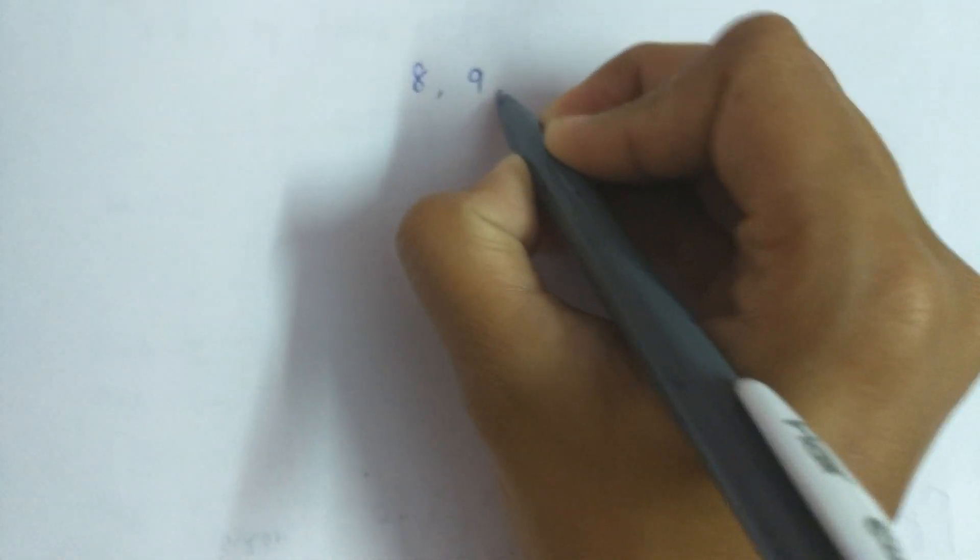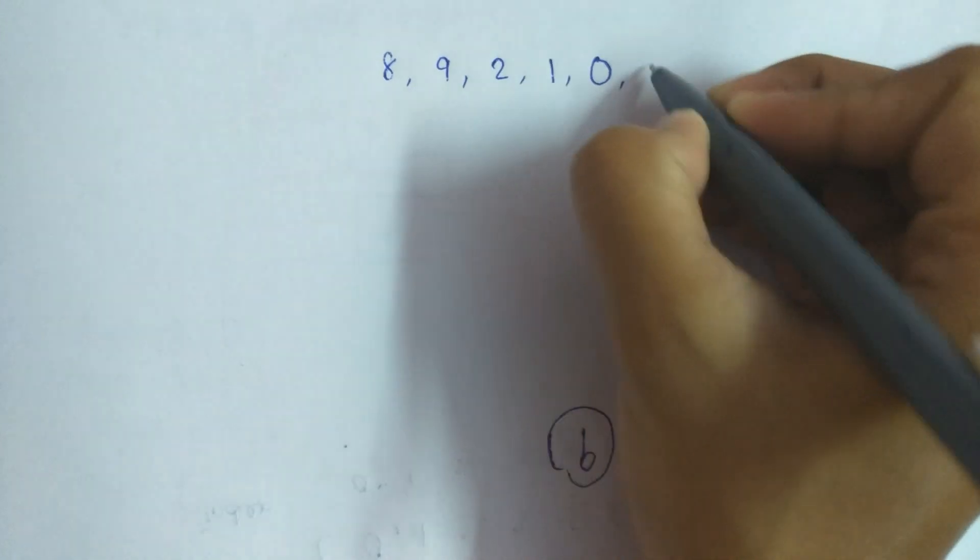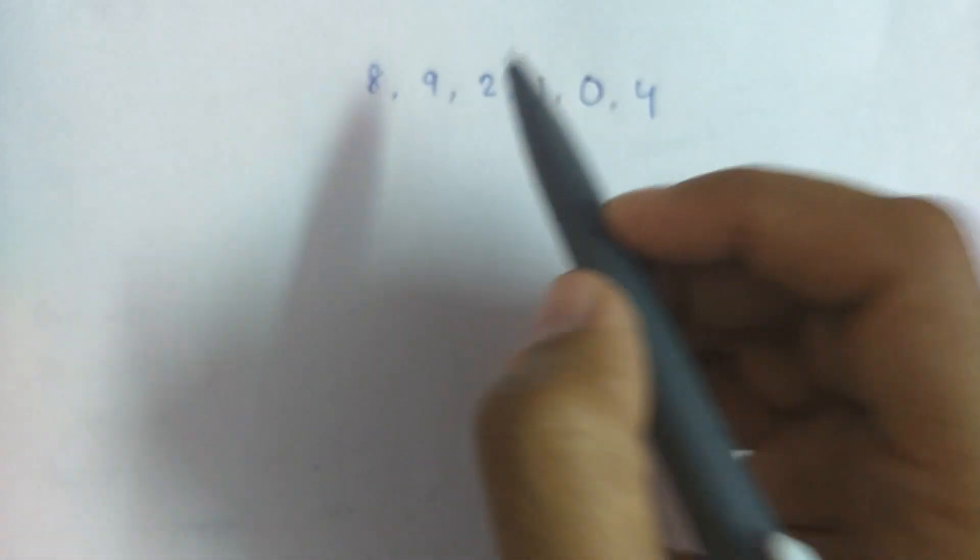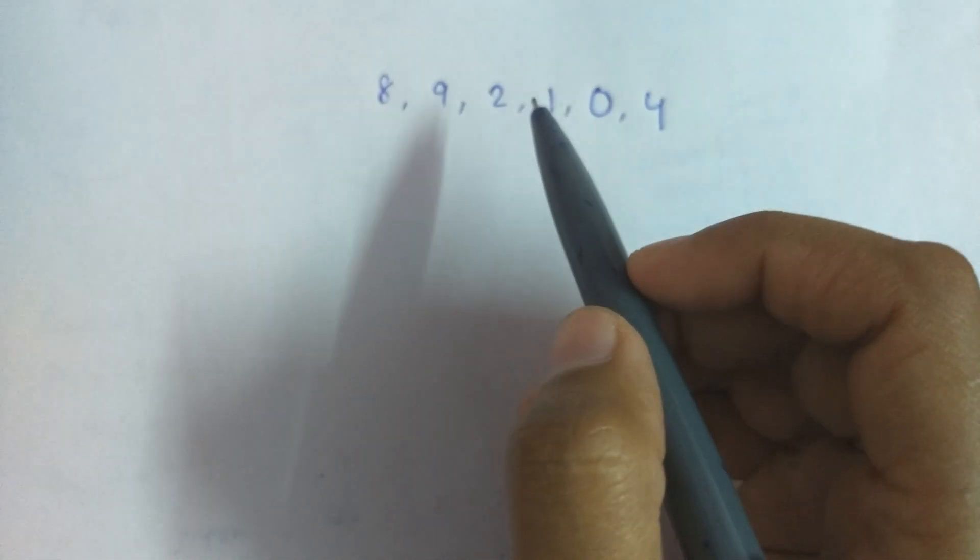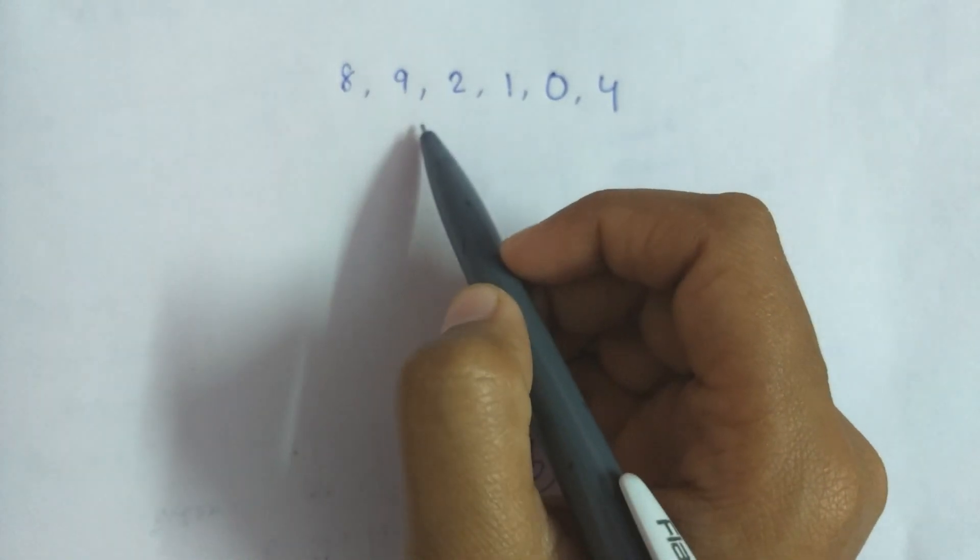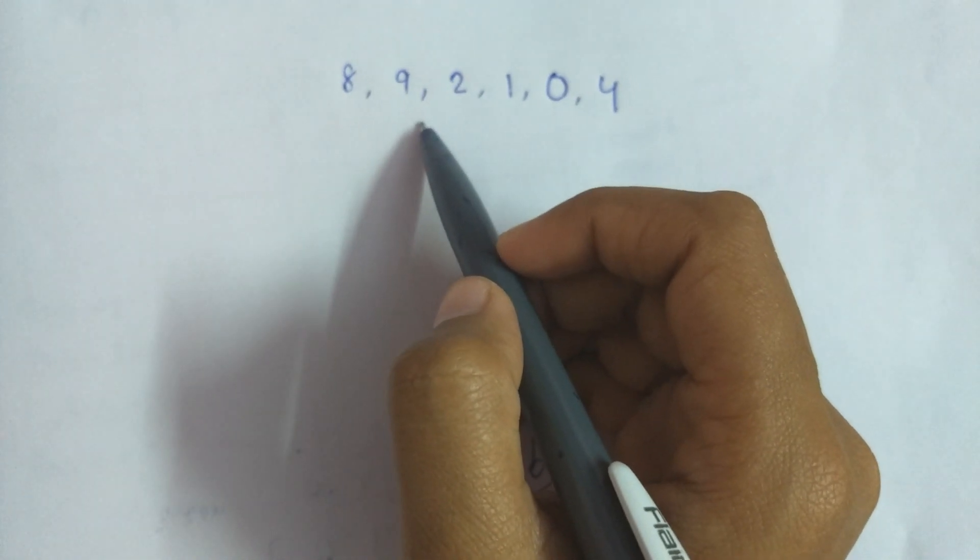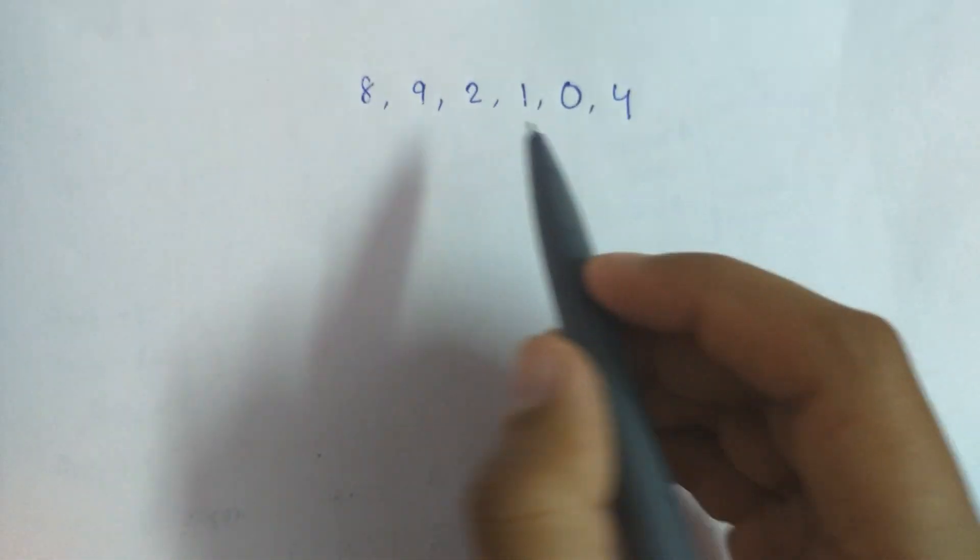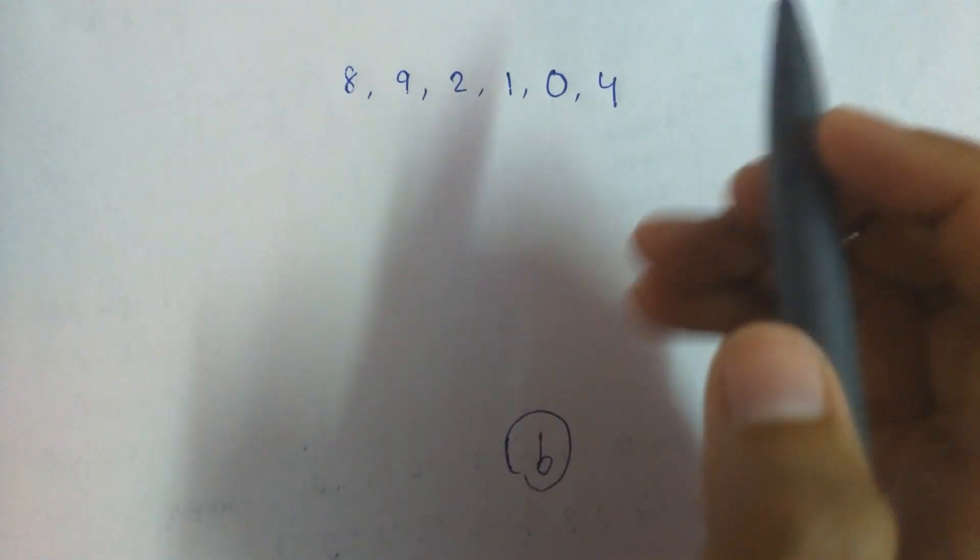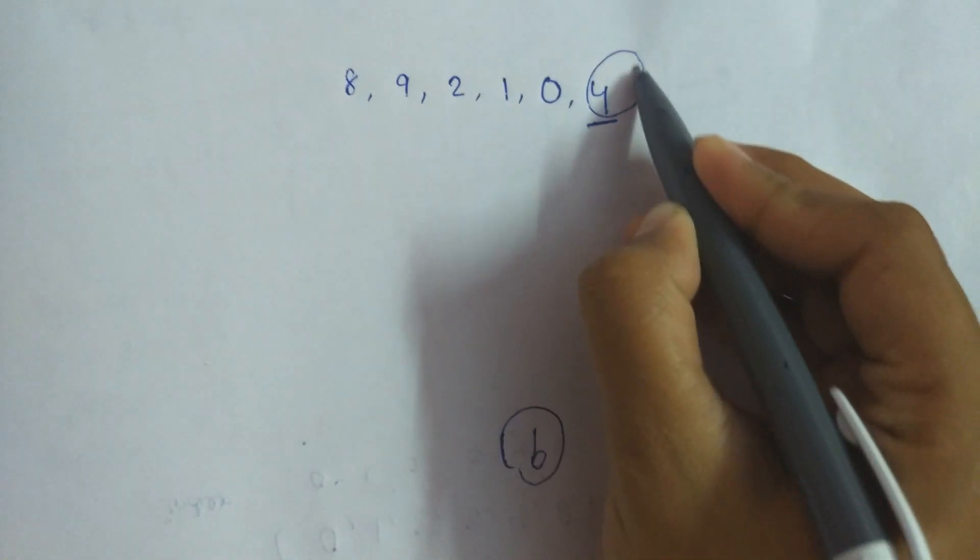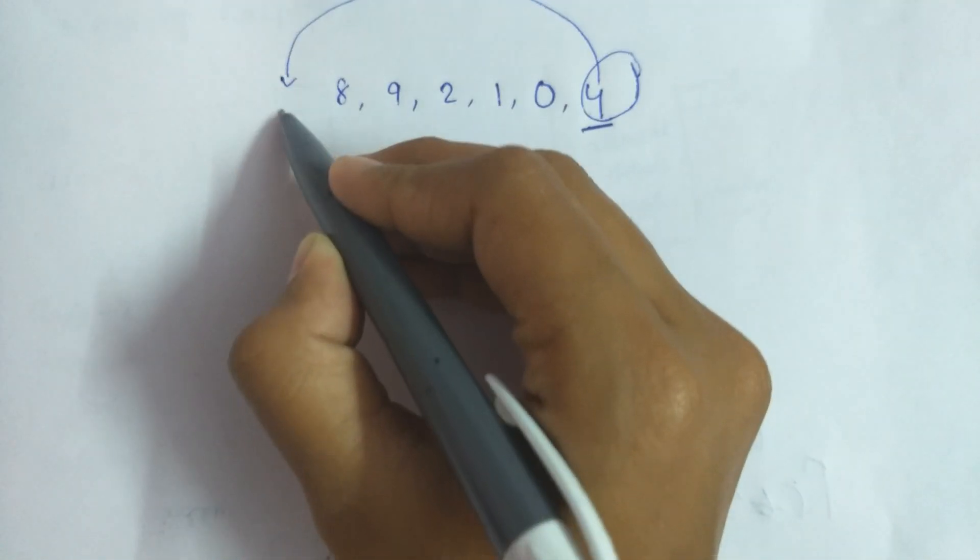If we have a series of numbers 8, 9, 2, 1, 0, 4 - what does the first property say? There exists an index i such that ai is monotonically increasing and ai through an-1 is monotonically decreasing. So as we can see over here that the property is not satisfied. How can we make it possible? We can move 4 from here to here.